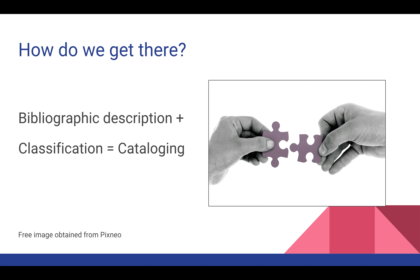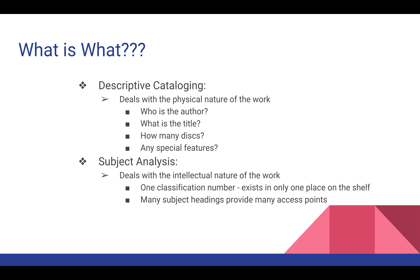With all these things to consider, we have to take the bibliographic description and add classification to create a cataloging system. It is a bit more complicated because we're not just a local catalog — we're a consortial catalog and the things that we do impact a lot of people. Descriptive cataloging deals with the physical nature of the work. The only concern is the physical characteristics of the item: the author, the title, editors, illustrators, place of publication, who published it, how many pages, and if it's a DVD, how long is the extent of the work.